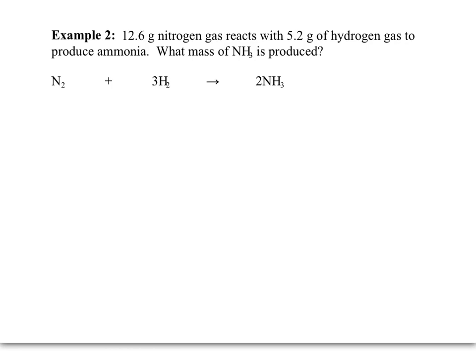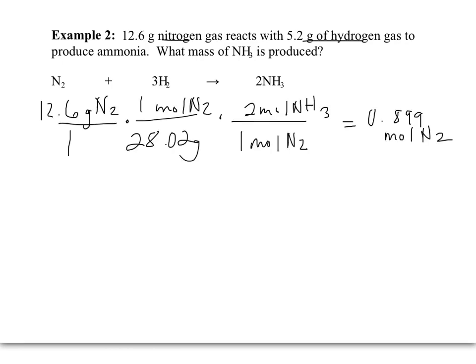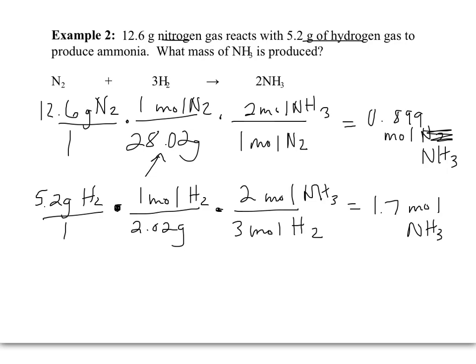In this next problem, we have masses of each of the reactants given. So we're going to want to convert those to moles and do a little comparison to find the limiting reactant. I take my 12.6 grams of nitrogen and convert it to moles and then use my mole ratio to find the moles of ammonia that should be produced. I then take my 5.2 grams of hydrogen, convert it to moles and find out how many moles of ammonia should be produced from the hydrogen.